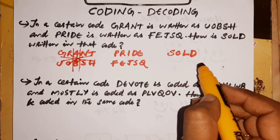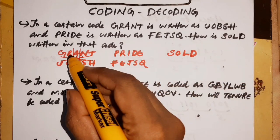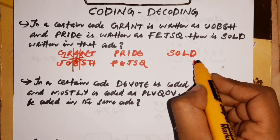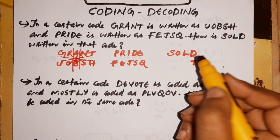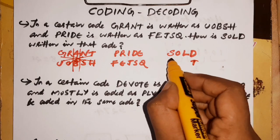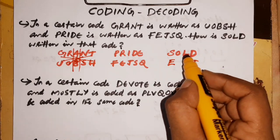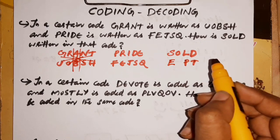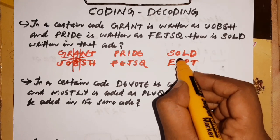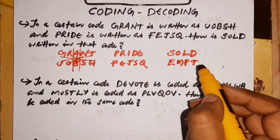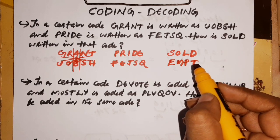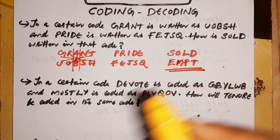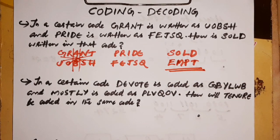For SOLD: S next letter is T, then O→P, L→M, then D→E. So the answer is E, M, P, T — EMPT. This question is simple.